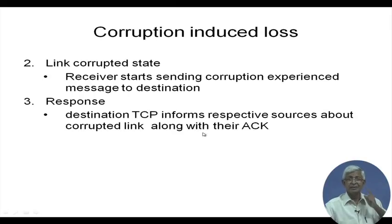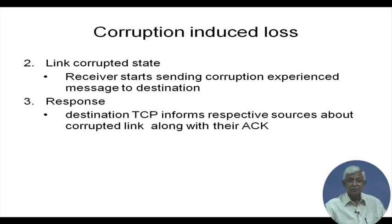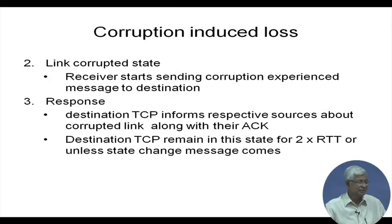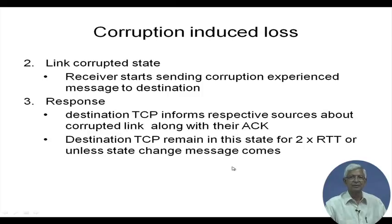The important information for the sender is that the link is corrupted — it does not go into slow start mode as normal TCP would, because it knows the loss is due to corruption, not congestion. The destination TCP remains in that state for two RTTs unless a state-change message arrives indicating the link is no longer corrupted.